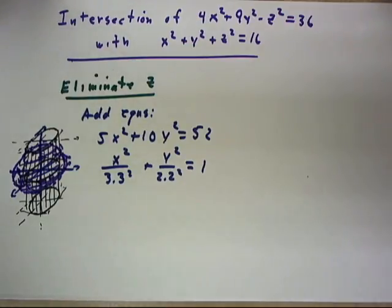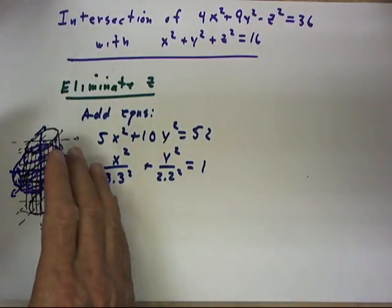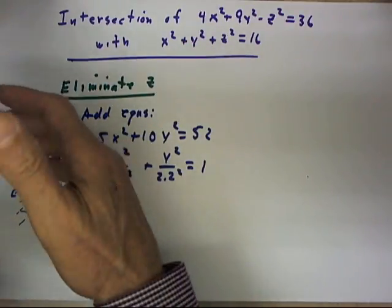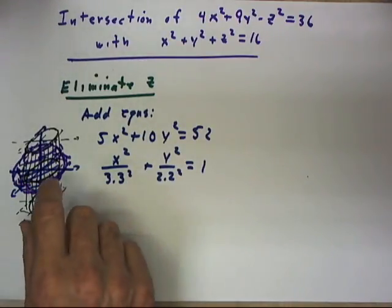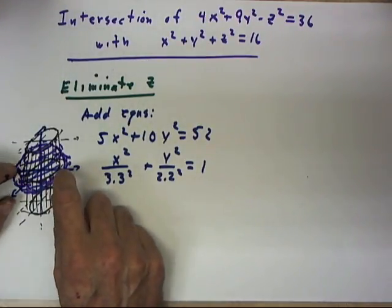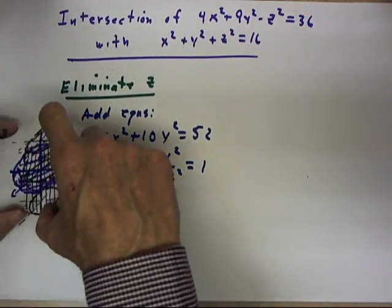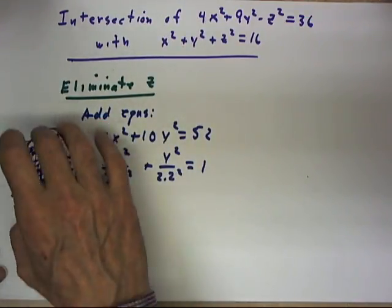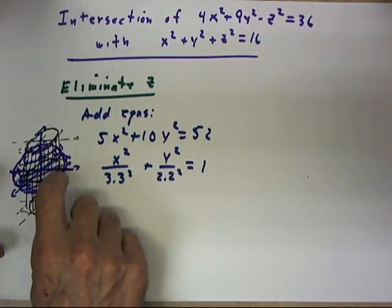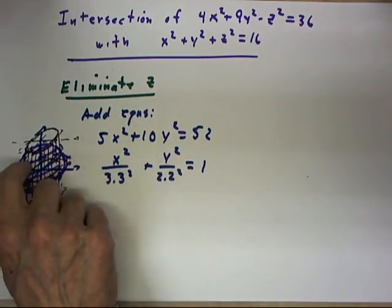Now, had we drawn the hyperboloid, the elliptical hyperboloid that represents this surface, it would have intersected this vertical cylinder, this elliptical cylinder, in exactly the same points that the sphere does.